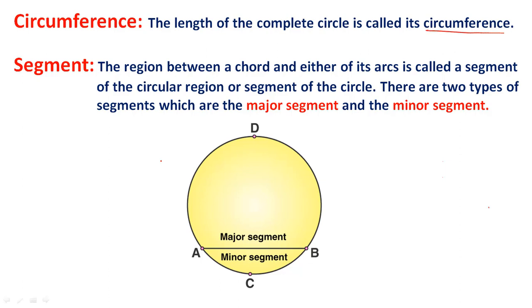The region between a chord and either of its arcs is called a segment of the circular region or segment of the circle. There are two types of segments: the major segment and the minor segment.